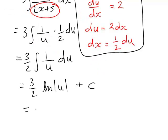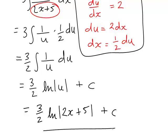Finally, we rewrite u, which was 2x plus 5, so we get 3 divided by 2, natural log of the absolute value of 2x plus 5 plus constant c. So that is another example of how we can integrate rational functions where the numerator is a constant and the denominator is a linear function.